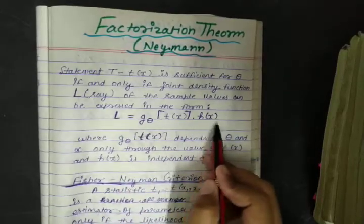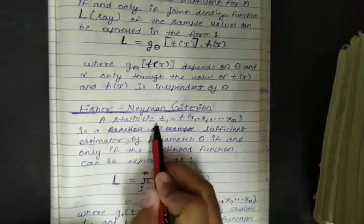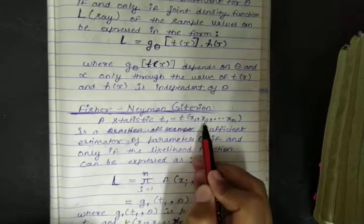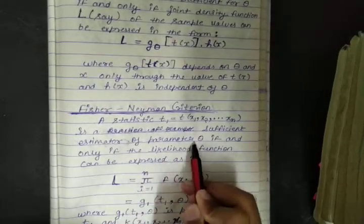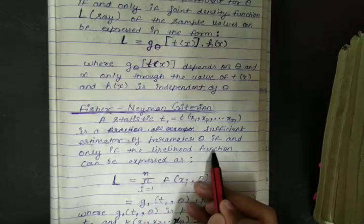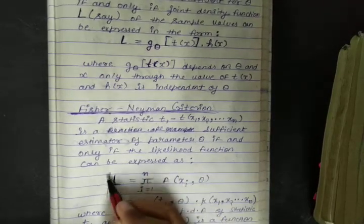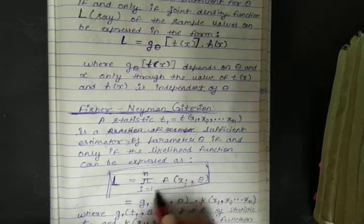Now Fischer-Neyman criteria is like this: a statistic t_1 which is equal to t(x_1 to x_n) is a sufficient estimator of parameter θ if and only if the likelihood function can be expressed as this value. You must have to remember only then you will be able to solve the numerical question.